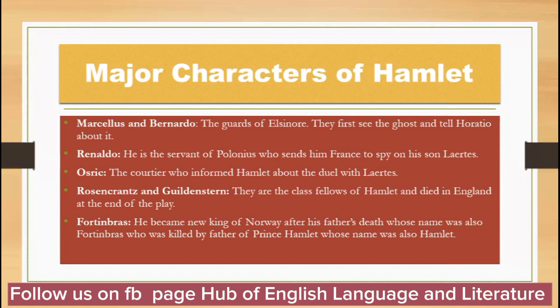Reynaldo is the servant of Polonius who sends him to France to spy on his son Laertes. Then there is Osric, the courtier who informs Hamlet about the duel with Laertes. Rosencrantz and Guildenstern are class fellows of Hamlet who work against him throughout the play and die in England at the end.